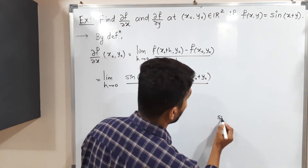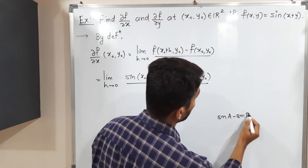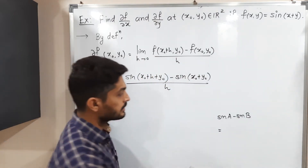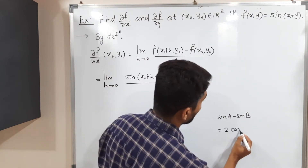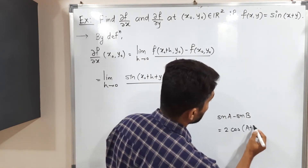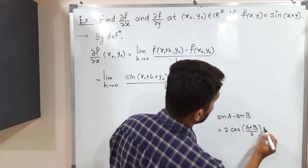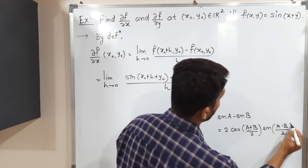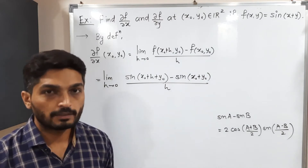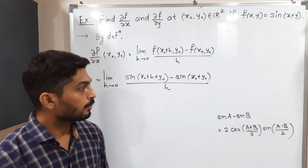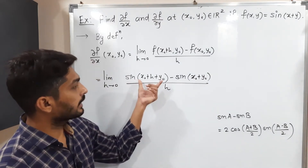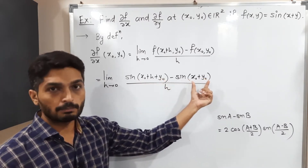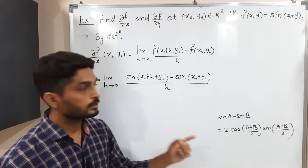We need to use the formula: sin A − sin B = 2 cos((A + B)/2) sin((A − B)/2). Here, A = sin(x₀ + h + y₀) and B = sin(x₀ + y₀), so let us apply that formula.